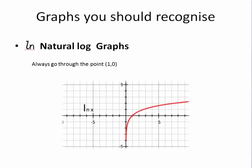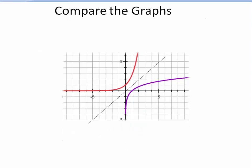Natural log graphs. They always go through the point one, zero. X equals one, Y equals zero. And finally let's compare the purple graph, which is the natural log graph, and this one which is e to the x. And they have a line of symmetry, which means they are the inverse of each other.